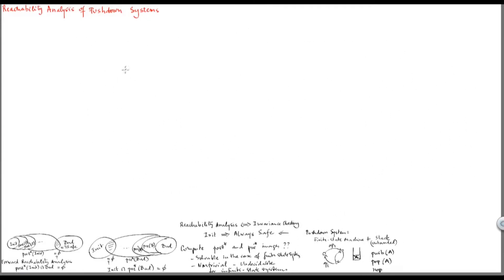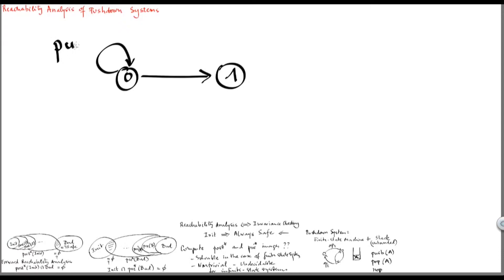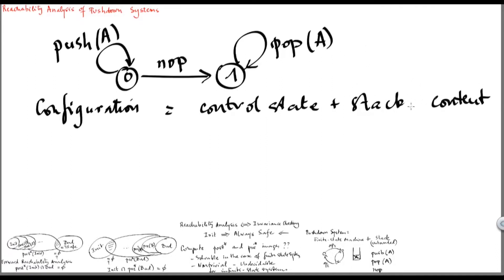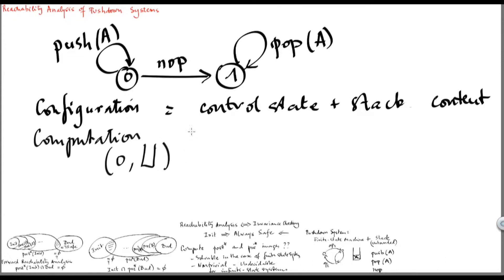Let's see a small example. We consider a system with two states, 0 and 1. When the machine is at state 0, it can push a symbol A and go back to state 0. At some point, it can move to state 1, and then it can repetitively pop symbols A staying in state 1. A configuration of this machine is a pair of a control state plus the stack content. A computation is a sequence of configurations corresponding to the application of transitions. Starting from the initial configuration 0 with an empty stack, we can apply the push operation, calling this transition tau1. By applying tau1, the control state remains the same but the stack now has A.